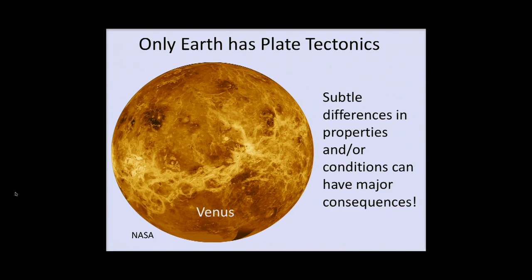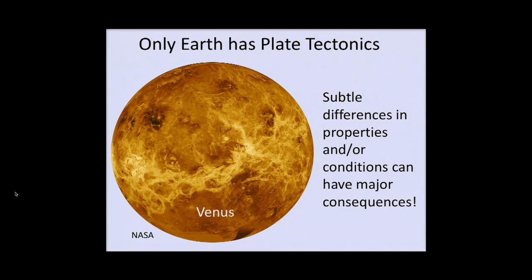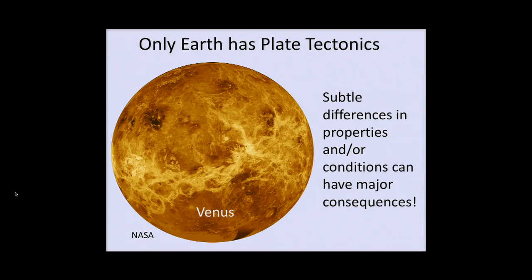Of all the planets in the solar system that we know about, Earth is the only one that has plate tectonics. If we look at Venus, for example — Venus is almost exactly the same size as the Earth, made of the same stuff, just a little closer to the Sun. And that difference, something about that difference, means the difference between having plate tectonics and not having plate tectonics. We don't know exactly why that is.